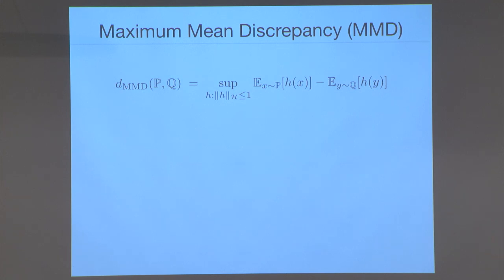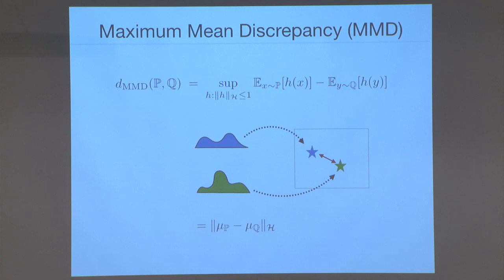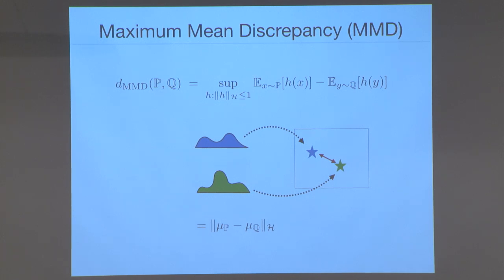Why is MMD easy to compute? There's a kernel trick: you embed both distributions into a reproducing kernel Hilbert space and take the Euclidean distance between those embeddings. After that it's all Euclidean distances — which is computationally tractable. MMD has been used widely for generative modeling, for testing whether two distributions are the same, for causality, and many other applications.